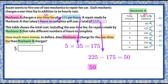So Mechanic B charges $40 per hour and $40 for their one-time fee — $40 to look at the car, then $40 per hour in addition to that. So our one-time fee for Mechanic B is $40, and our one-time fee for Mechanic A was $50. If we subtract these, we find how much more Mechanic A charges than Mechanic B. $50 subtract $40 is $10 — so $10 is how much more Mechanic A charges for that one-time fee than Mechanic B.